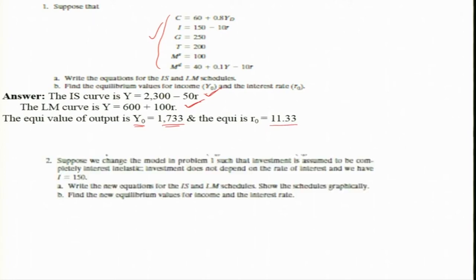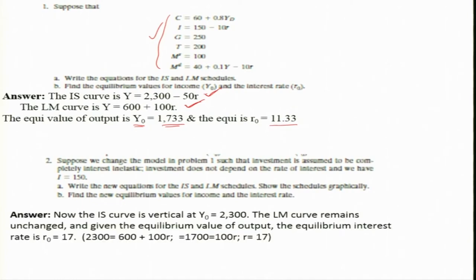If you make some further changes, we can find more results. In this further problem set, the IS curve is vertical — that is, Y is 2003. The LM curve remains unchanged, and given this equilibrium value of output, the equilibrium rate of interest is 17 percent.